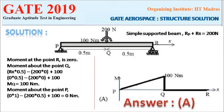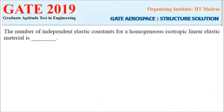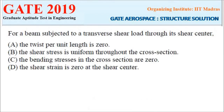Next question: the number of independent elastic constants for a homogeneous isotropic linear elastic material. For isotropic materials, this is simply 2. So the correct answer is 2.